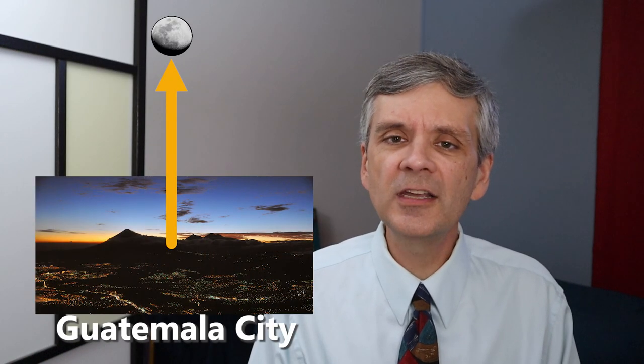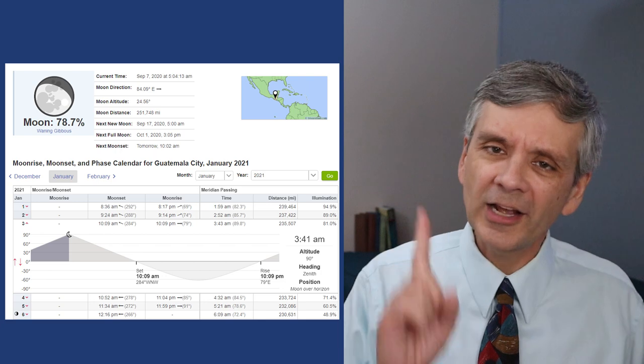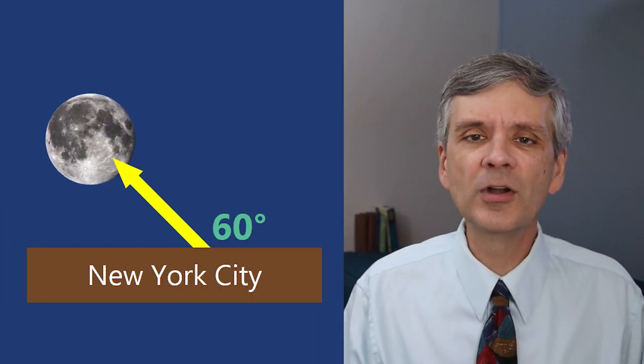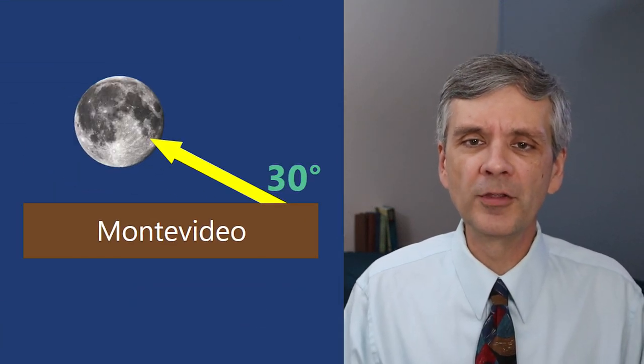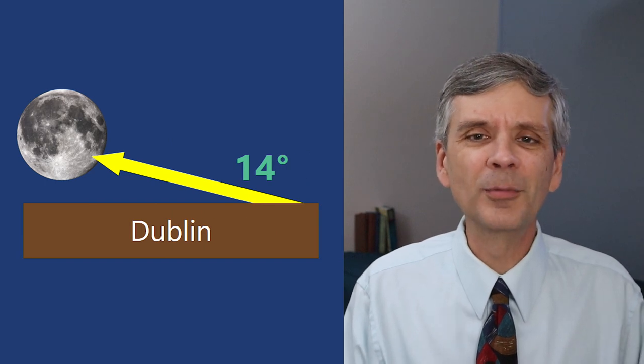The moon can appear high in the sky in one city while simultaneously appearing low in the sky somewhere else. For example, there's a moment in time when the moon is directly overhead Guatemala City and simultaneously appears 60 degrees above the horizon in New York and 30 degrees above the horizon from Montevideo, Uruguay, and only 14 degrees in Dublin, Ireland, all at the same moment in time.